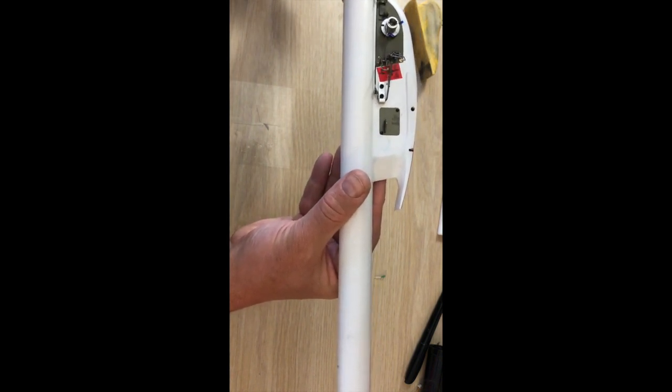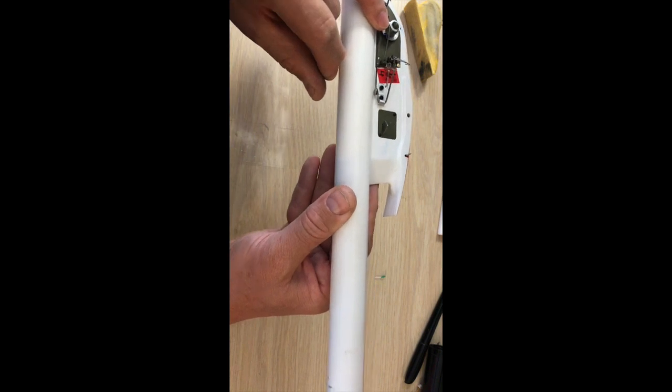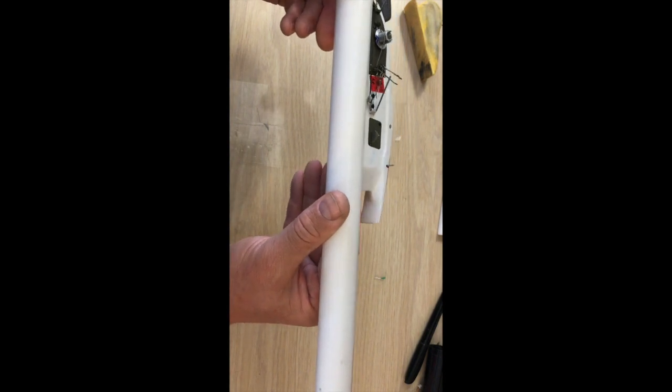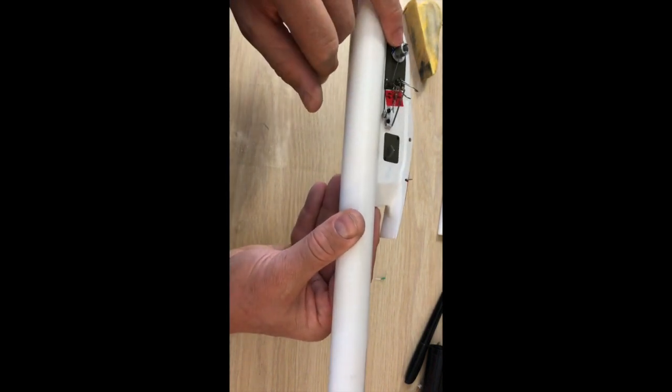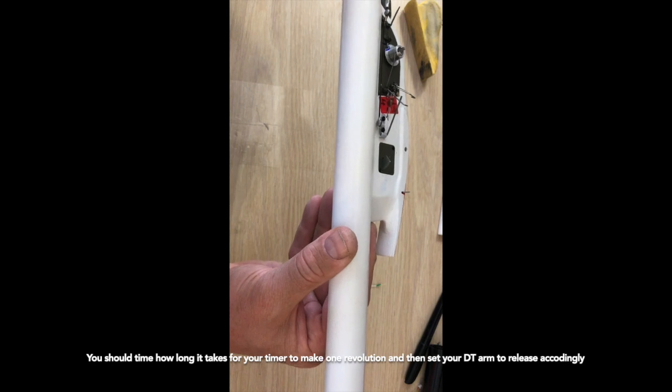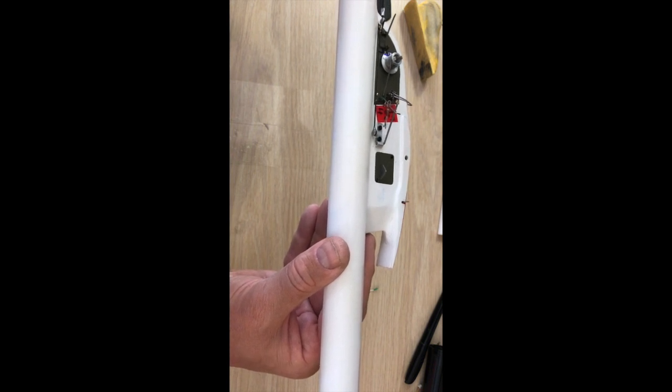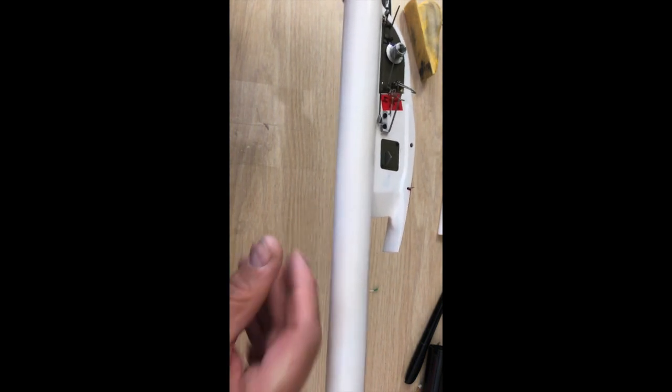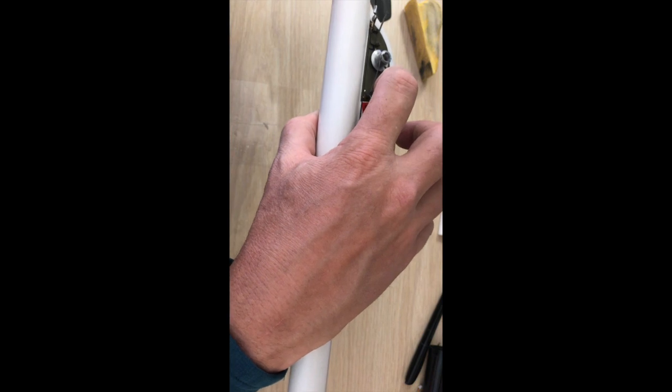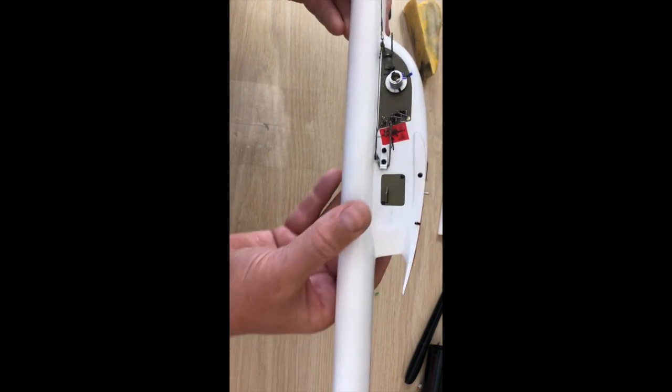There you go. And in about 30 seconds time, the DT line will pop and release the stab. So I think I said one minute per scroll; it should be 30 seconds per scroll.